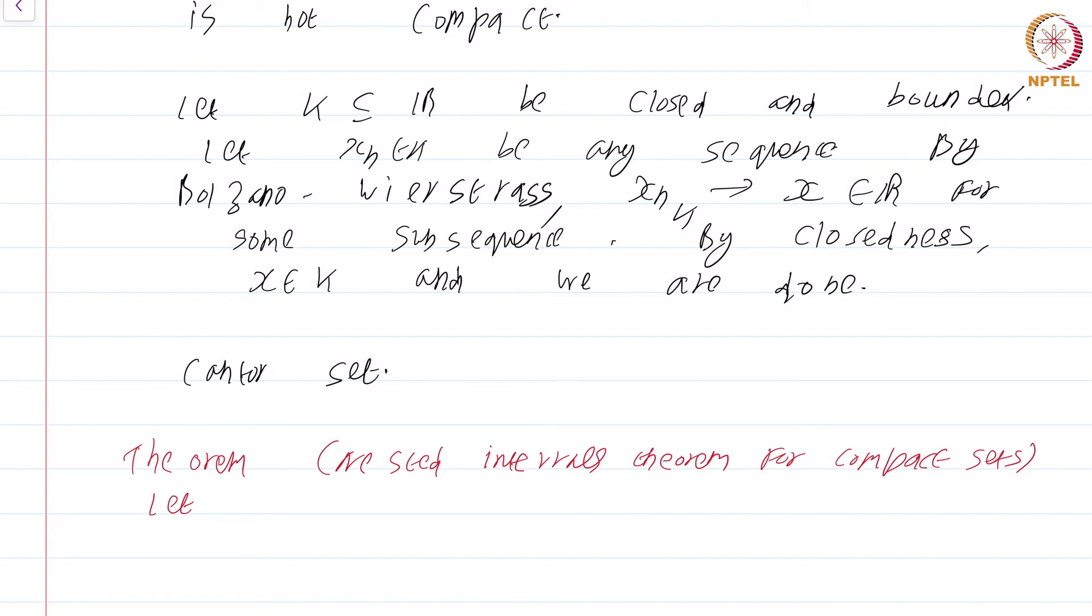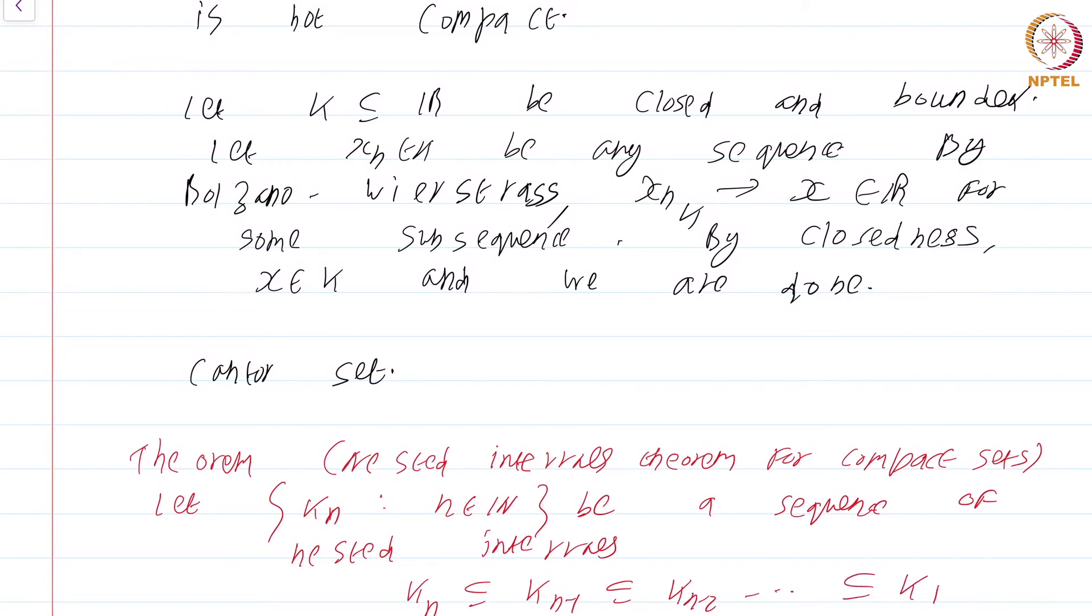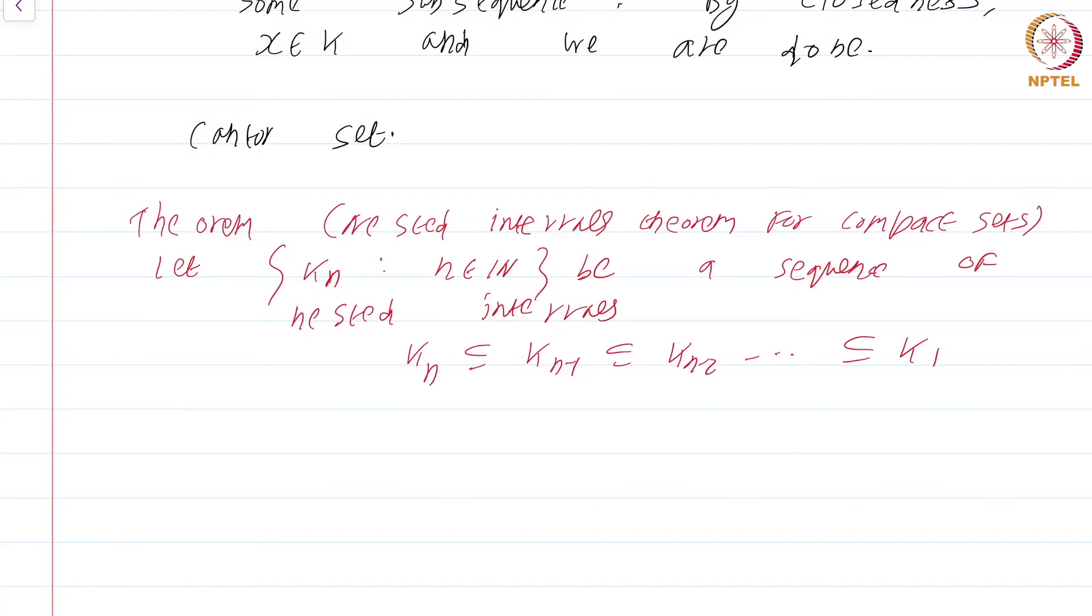Let k_n be a sequence of nested compact sets. This just means that k_n is a subset of k_{n-1}, a subset of k_{n-2}, and so on, a subset of k_1. The sets are all nested inside each other, like a Russian doll.